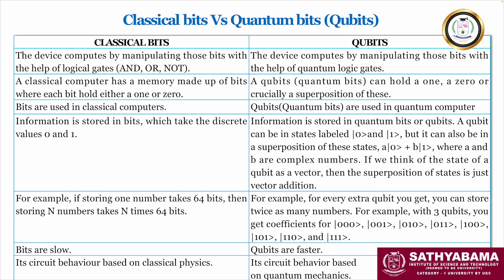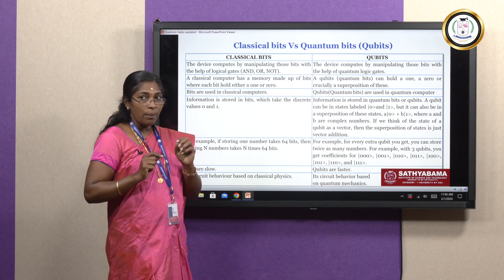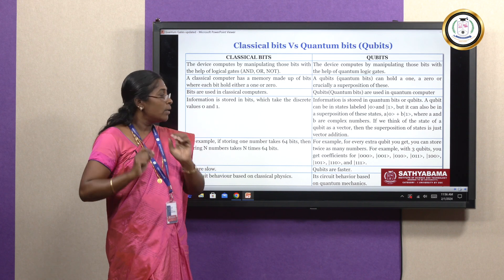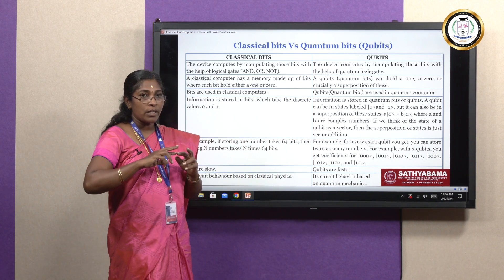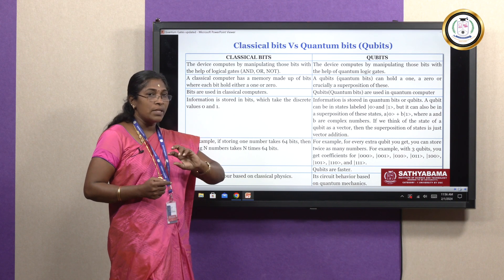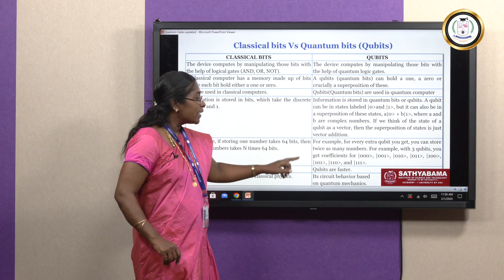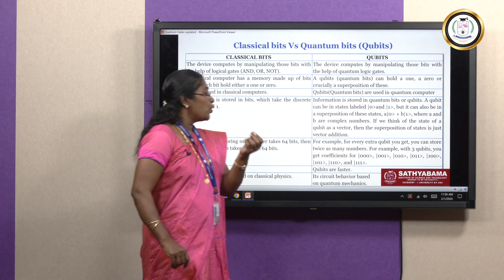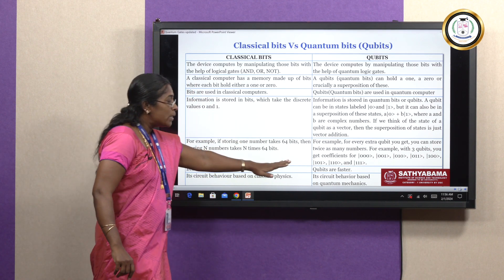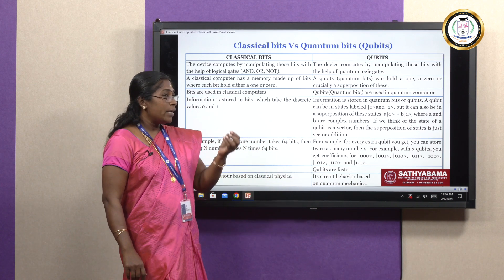In classical computing, 64 bits are used to represent a number. For quantum, representing a single qubit requires 2^n bits. For example, with two states — 0 and 1 — the superposition state gives combinations of 0s and 1s. For a single qubit, we have 0, 1, and the combinations 00 and 01. For 3 qubits, we get 2^3 = 8 combinations. Because of this reason, quantum computing is very fast and gives solutions to complex problems very quickly.